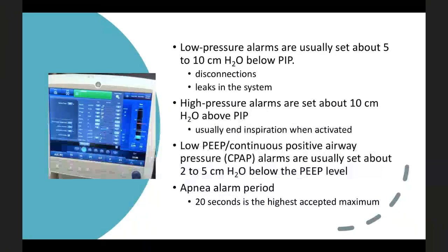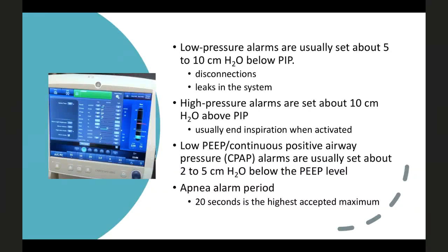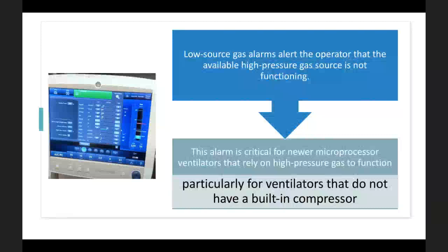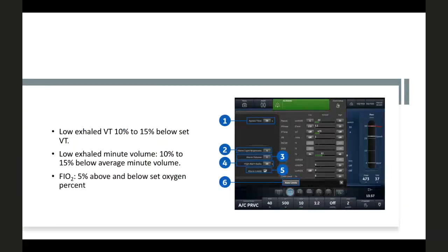A major problem in ICUs is junior doctors becoming habituated to alarm sounds and ignoring them — this practice must not be supported. Every case needs sensible alarm limits set so that whenever a limit is exceeded, clinicians are alerted. Low source gas alarms indicate the high-pressure source is not functioning — critical for microprocessor ventilators without a built-in compressor. Low exhaled tidal volume alarm: set 10–15% below set tidal volume. Low exhaled minute volume: 10–15% below expected average. FiO2 sensor alarm: 5% above and below set oxygen percentage.